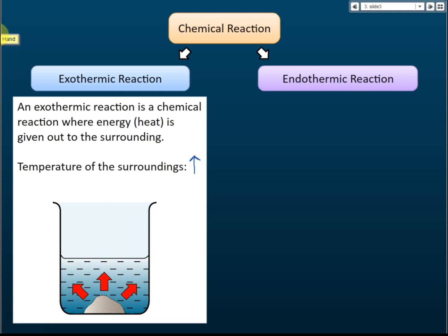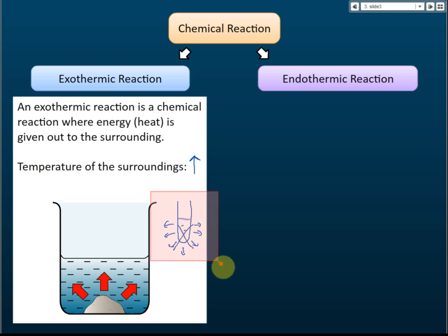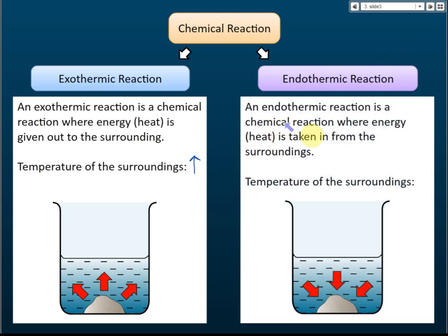In some textbooks, they draw the diagram with a test tube and solutions, and they draw arrows to indicate that heat energy is released to the surroundings. When students see this, they think the temperature of the solution will decrease because it looks like the energy goes to the air — but this is not correct. The energy is released from the chemical to the immediate surrounding, which is the solution or water, so the temperature of the water will increase.